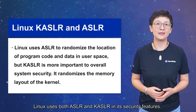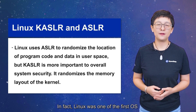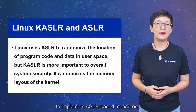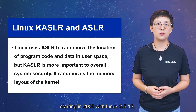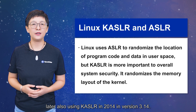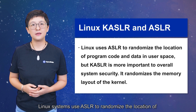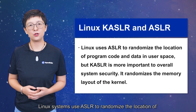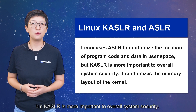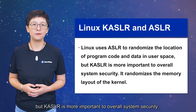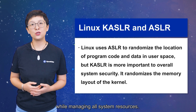Linux uses both ASLR and KASLR in its security features. In fact, Linux was one of the first OS to implement ASLR-based measures, starting in 2005 with Linux 2.6.12, and later also using KASLR in 2014 in version 3.14. Linux systems use ASLR to randomize the location of program code and data in user space, but KASLR is more important to overall system security, randomizing the memory layout of the kernel to protect the central component while managing all system resources.